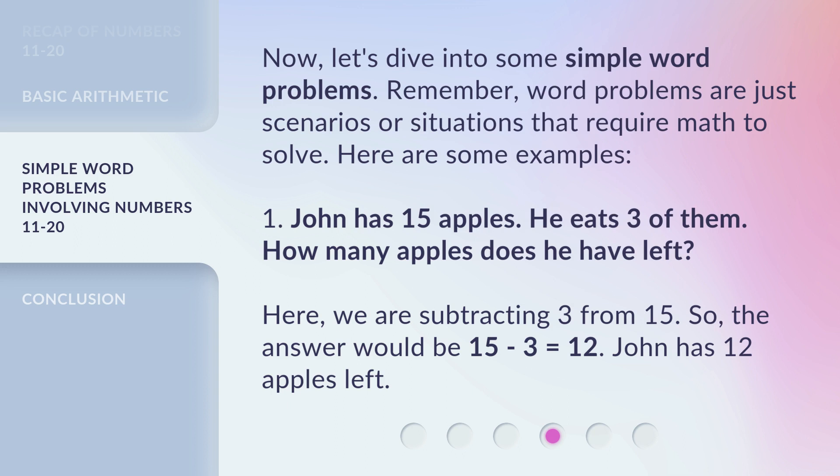One. John has 15 apples. He eats three of them. How many apples does he have left? Here, we are subtracting 3 from 15. So, the answer would be 15 - 3 = 12. John has 12 apples left.